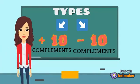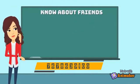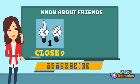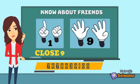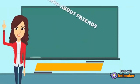Before moving ahead, let's learn about friends. Use your both hands and make one on your hand. Now count how many fingers are closed — yes, it's nine. So nine is a best friend of one, or you can say one is a best friend of nine.